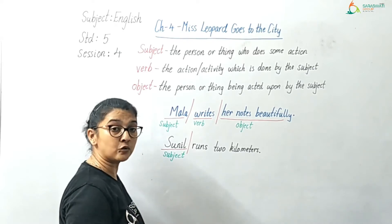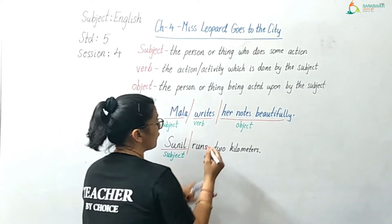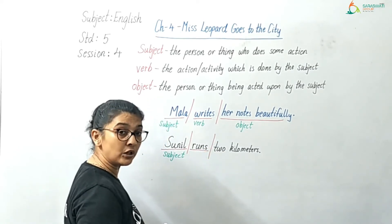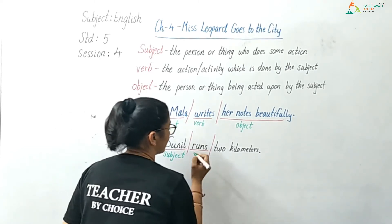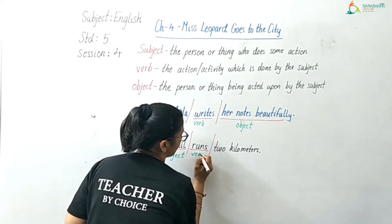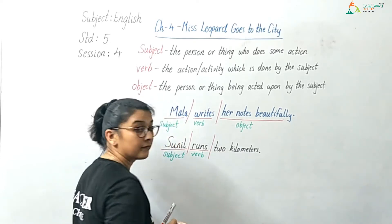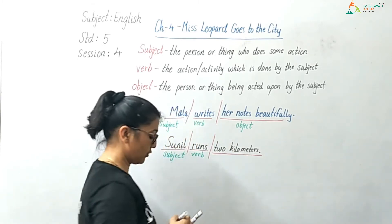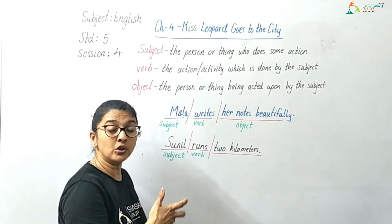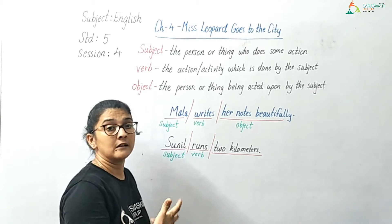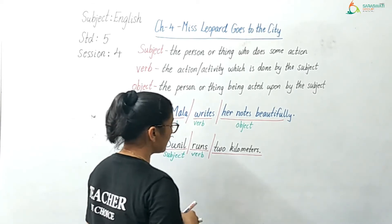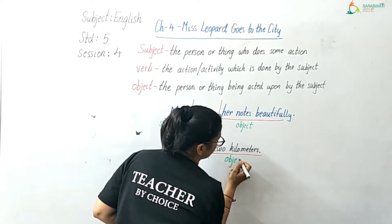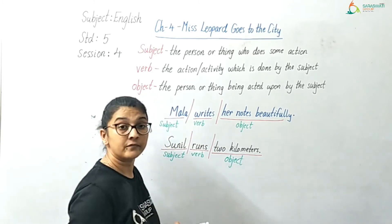What action is being done by Sunil? The action of running. That is done by the subject, so that is the verb. 'Runs' — that is the verb. And then comes the object. Sunil runs — but what? Sunil runs two kilometers. So 'two kilometers' is the object of the sentence.